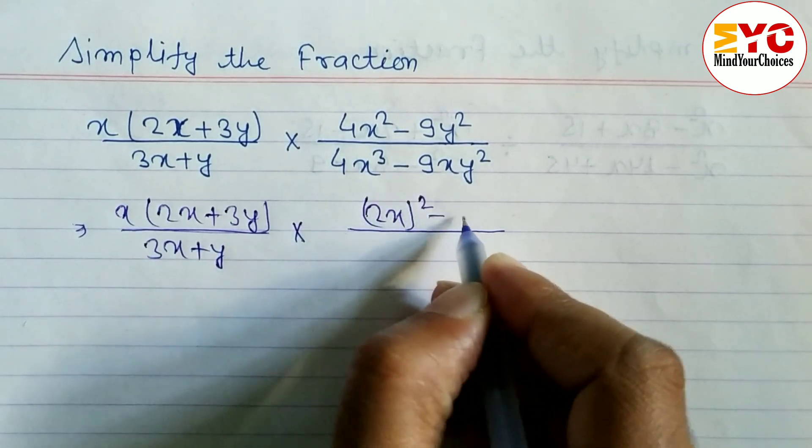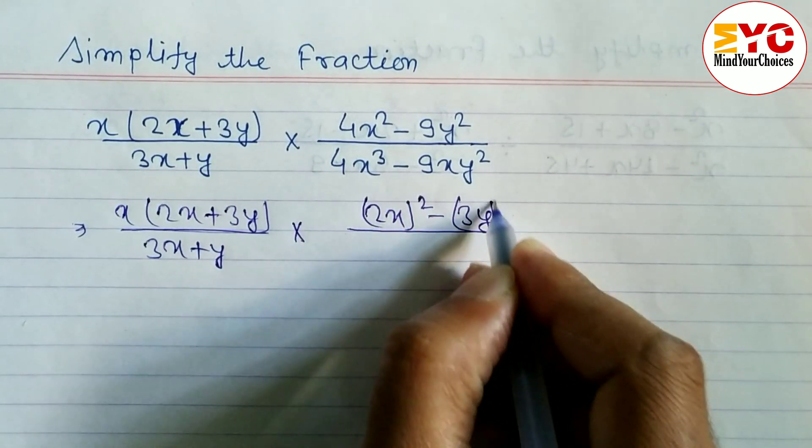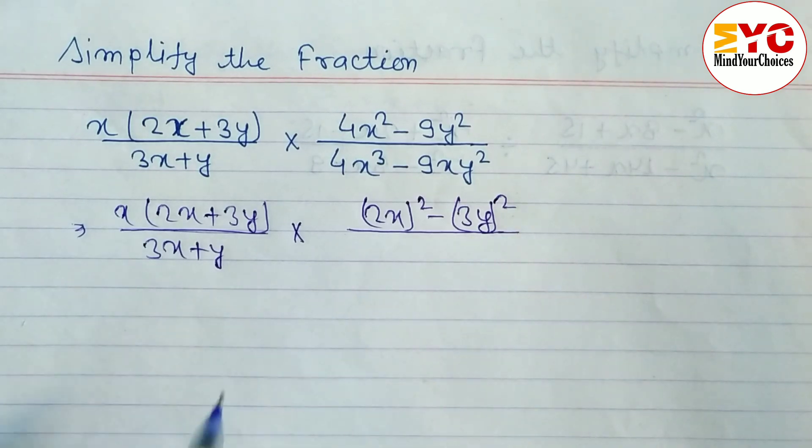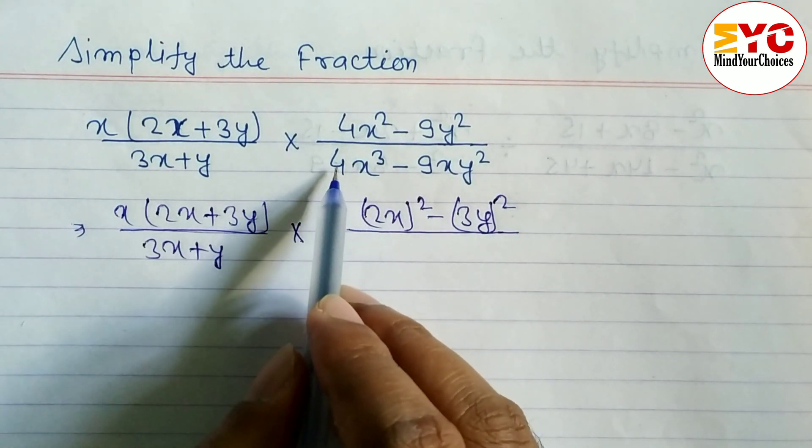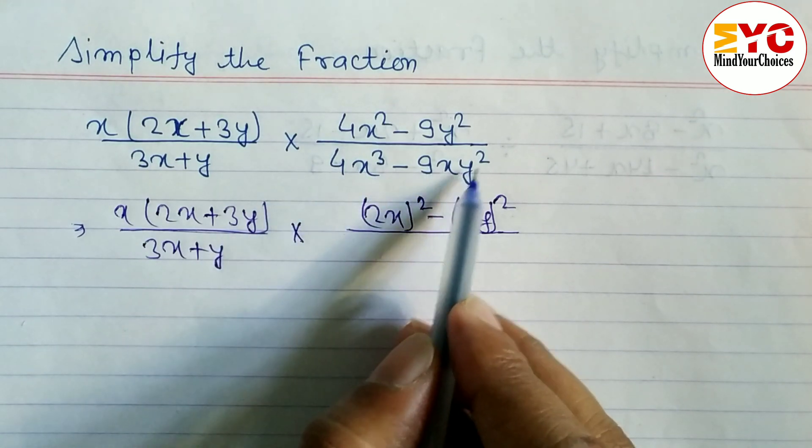One thing you have to keep in mind: if common, first of all we have to take common, then only factorize or use formula. Now look at here, 4x cubed minus 9xy squared.